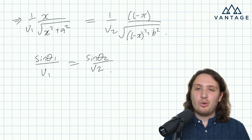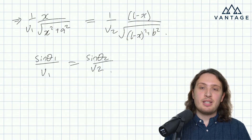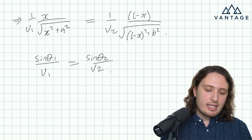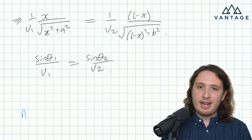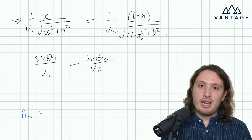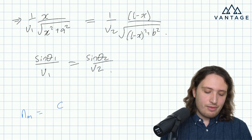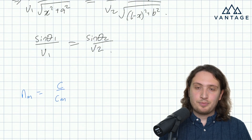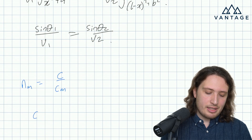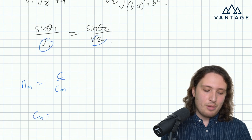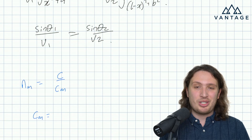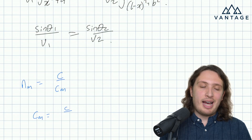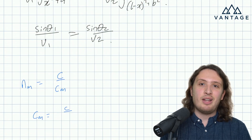Let's finish the Snell's law analogy by rewriting the velocities in terms of refractive indices. The refractive index in a medium is given by the speed of light in a vacuum, c, over the speed of light in the medium. So the speed of light in a medium — like my V1 and V2, since the sand and water are like media — is going to be c divided by the refractive index.